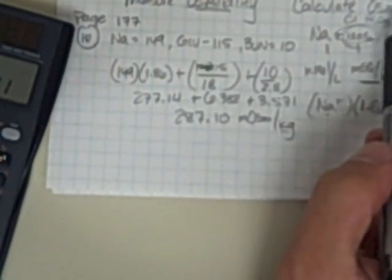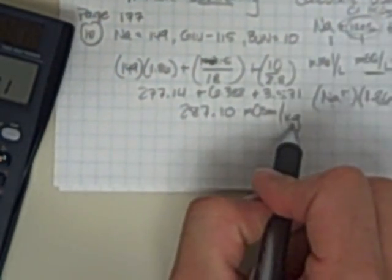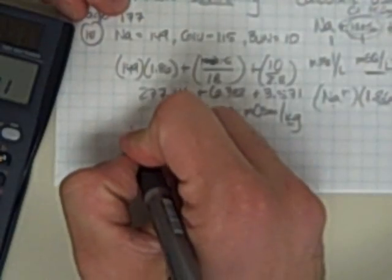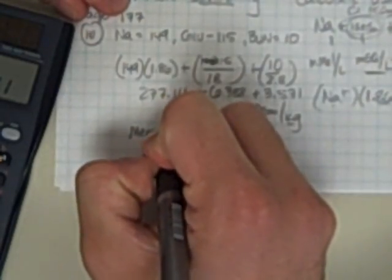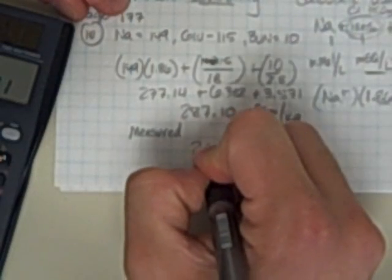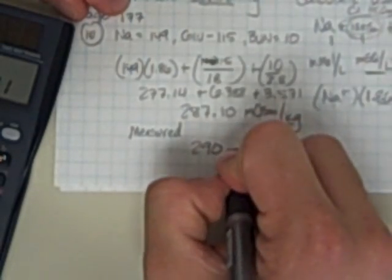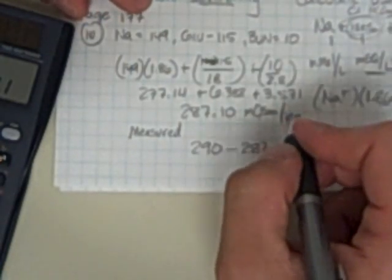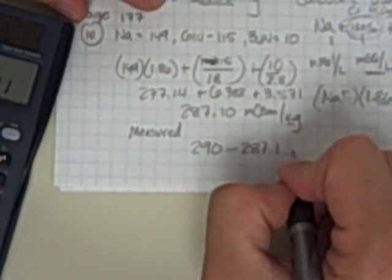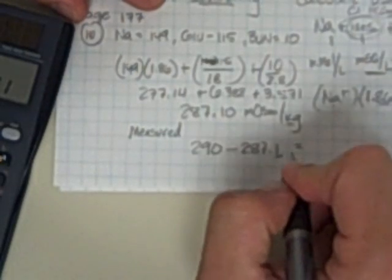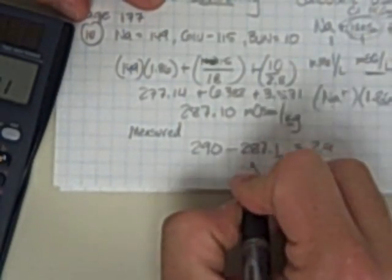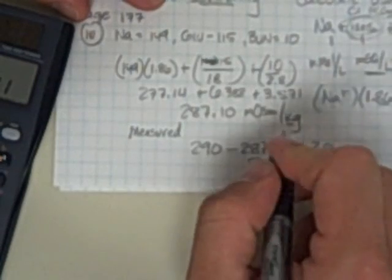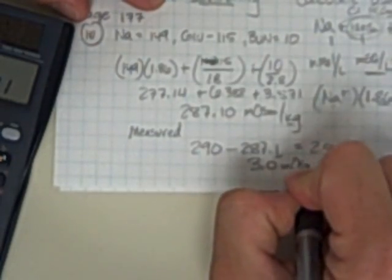it's a number of particles per weight of solution. And it's very similar to millimoles per liter, but in this case, we're talking milliosmoles per kilogram. So in this particular problem, we're told that the measured osmolality was 290. So 290 minus my 287.1 gives me a value of, and we're going to go ahead and round that, and call it either 2.9 or 3.0 milliosmoles per kilogram.